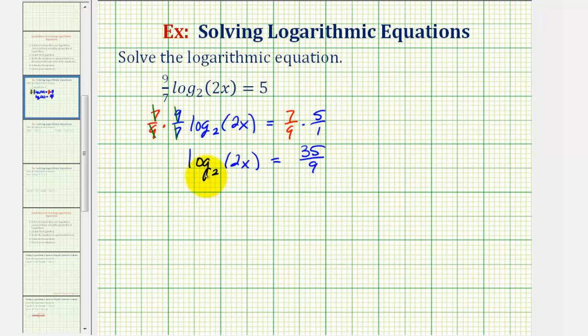Now we want to write the log equation as an exponential equation by identifying the base, exponent, and number. So two is the base, 35 ninths is the exponent, and this must equal two x. Again, two raised to the power of 35 ninths must equal two x.